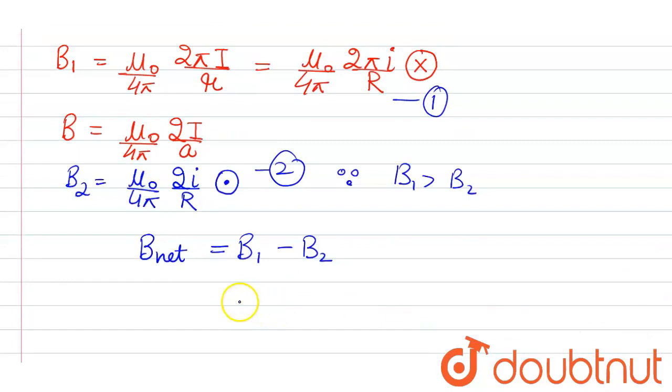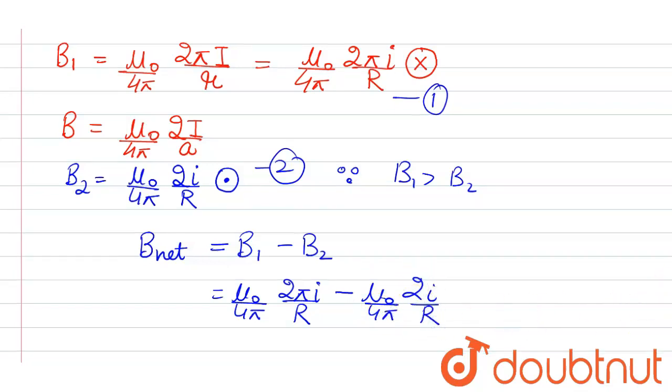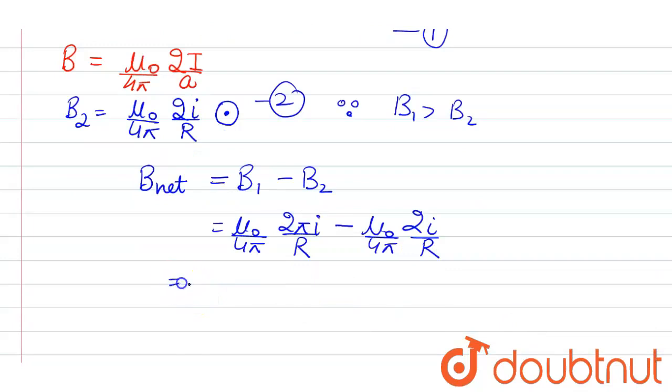Now putting the value here we get μ₀/(4π) × 2πi/R minus μ₀/(4π) × 2i/R. Here taking common μ₀/(4π) × 2i/R.